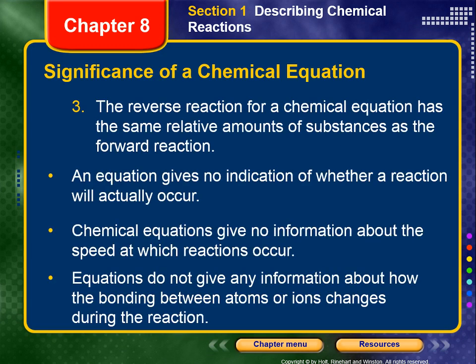Third, the reverse reaction for a chemical equation has the same relative amounts of substances as the forward reaction — reversibility doesn't change the coefficients. An equation gives no indication of whether a reaction will actually occur under those conditions. Chemical equations also give no information about the speed at which reactions occur — that is a kinetics issue — or about how the bonding between atoms or ions changes during the reaction.